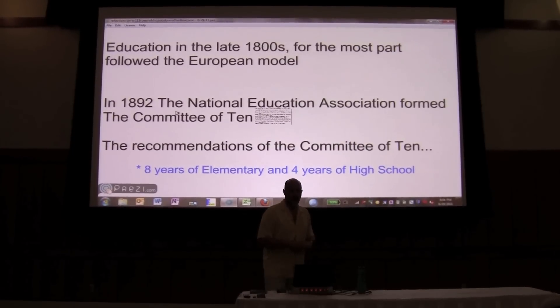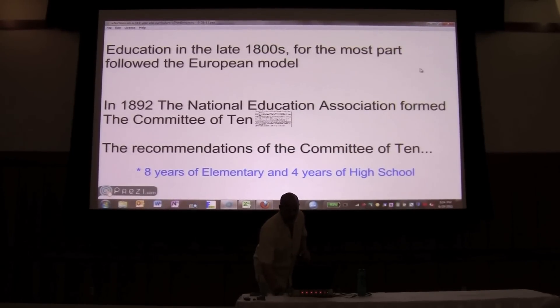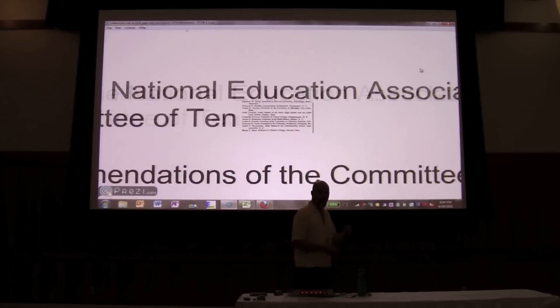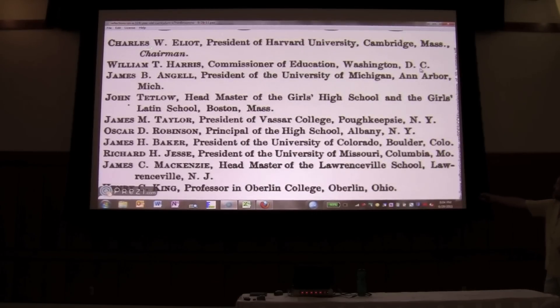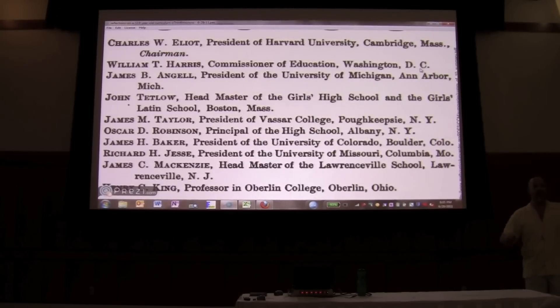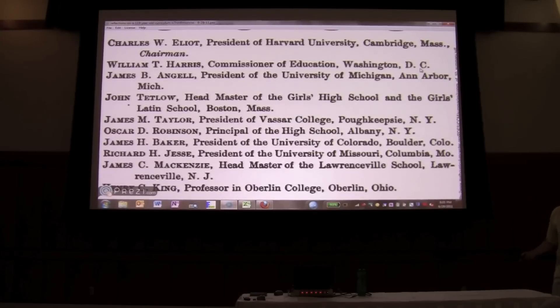So, in 1892, the National Education Association formed the Committee of 10. And this is the list of the Committee of 10. The chairman was Charles Elliott, the president of Harvard at the time. These 10 men, all men, were from universities, presidents of universities, principals of private schools, and only one was a principal of a public school.